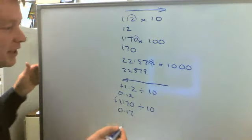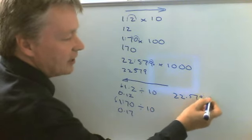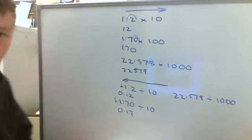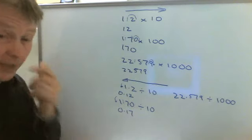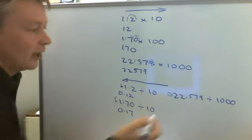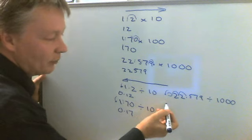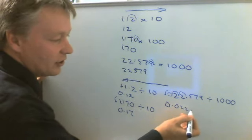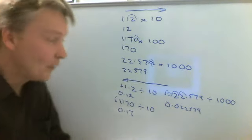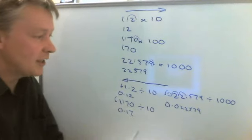And then the bigger number at the end, we're going to have 22.579 divided by 1000. So I'm going to move three decimal places. Now just looking at it there, I'm going to need a 0. So I'm actually going to put it in there. So a 0 placeholder. And then I'm going to move my decimal point. One, two, three. So it would be 0.022579 would be then my answer.